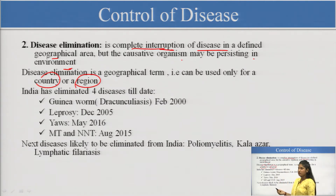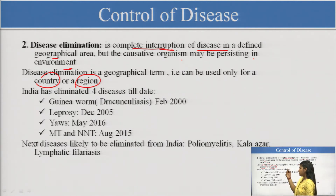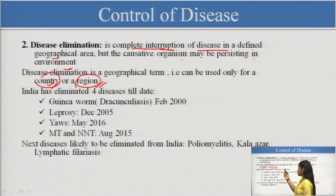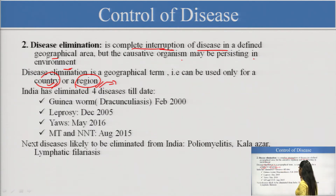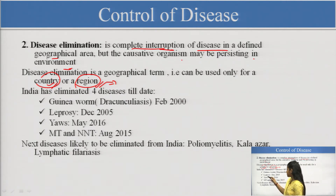For example, India may have eliminated a disease, but some other countries may still have it. So elimination is used at the country level or for a region — for example, Uttar Pradesh or Delhi has eliminated the disease. This is a regional-wise term as well.